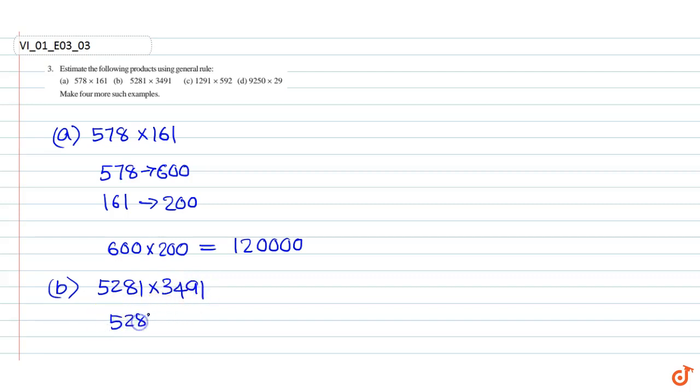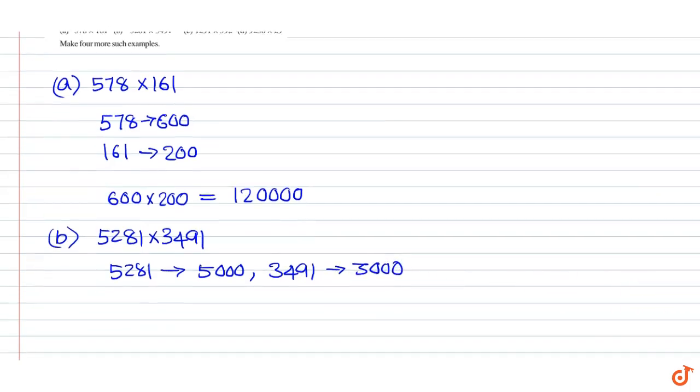5281 can be rounded to 5000. 3491 can be rounded to 3000. Therefore, the product is 5000 x 3000 which is equal to 15,000,000.